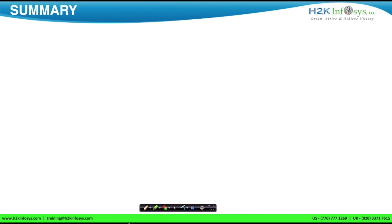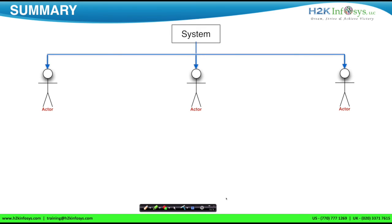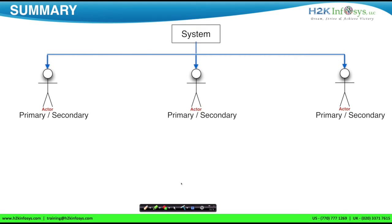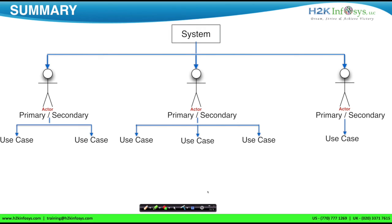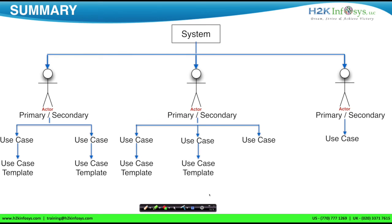Let me summarize what we learned and show the logical flow of work. First, a BA should understand or identify the system — the project to be developed. Second, a BA has to identify the actors for the system; a system can have one or multiple actors depending on what the system is meant to function. Third, identify primaries and secondaries — an actor can be primary or secondary in nature. Fourth, identify use cases; each primary actor may have one or multiple use cases depending on the role of the actor.